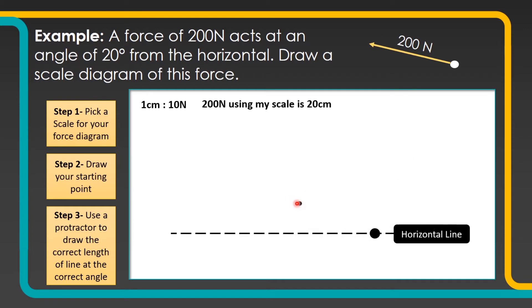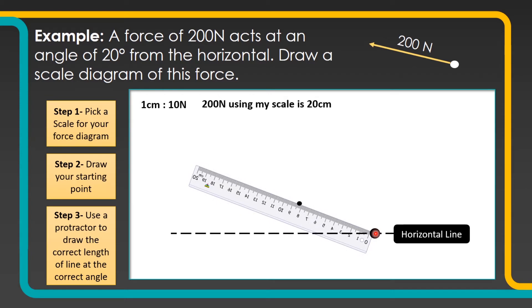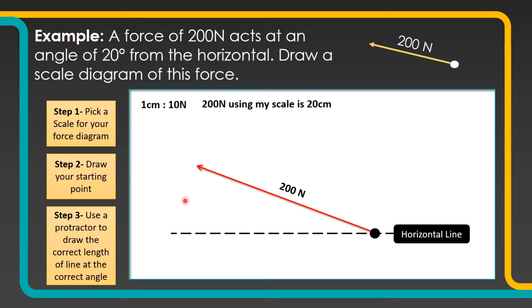Take my protractor away, and then from my starting point I'm going to draw a 20 centimetre long line using a ruler, going through the little dot which represents my 20 degree angle. Then draw my line in, take my ruler away, and that line needs to be labelled as 200 newtons — I could draw the angle in as well.